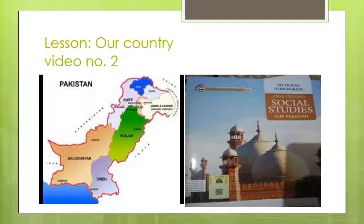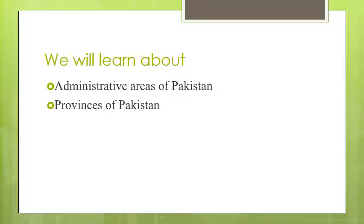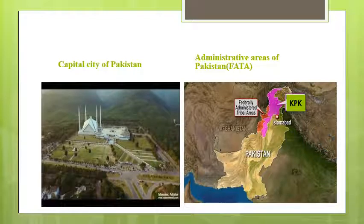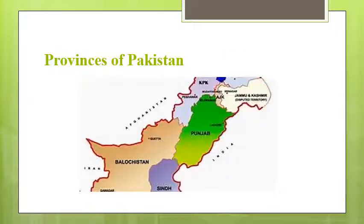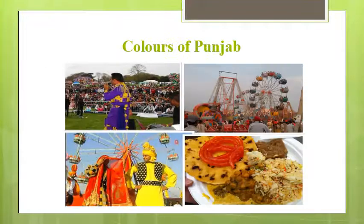Students, this is video number two of the lesson 'Our Country'. Today we will learn about the administrative areas of Pakistan and its provinces. The federal capital of Pakistan is Islamabad. In addition to the Islamabad Capital Territory and the Federally Administered Tribal Areas (FATA), Pakistan has four provinces: Balochistan, Khyber Pakhtunkhwa, Punjab, and Sindh. Gilgit-Baltistan is also a federally administered area.